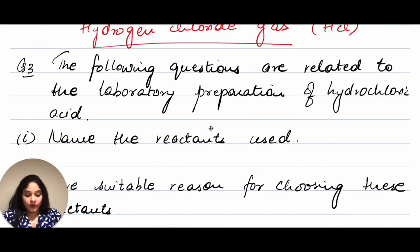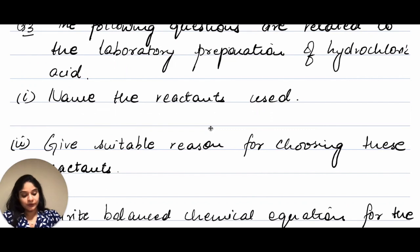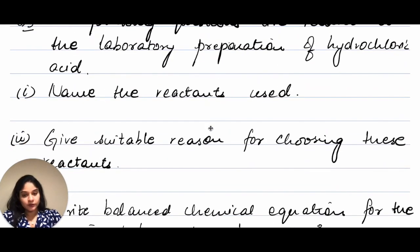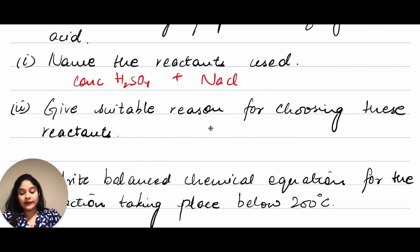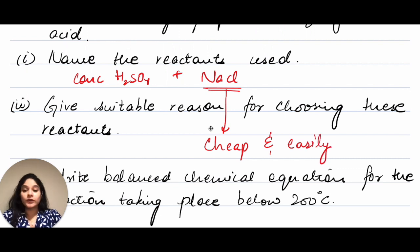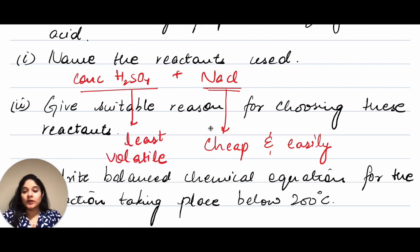The next questions are related to the lab preparation of hydrochloric acid. Name the reactants used — the reactants are concentrated sulfuric acid and sodium chloride, NaCl. Give a suitable reason for choosing these reactants: NaCl is first of all cheap and easily available, and concentrated H₂SO₄ is chosen because it is the least volatile acid. So these are the two reactants used for the preparation of hydrochloric acid in a lab.